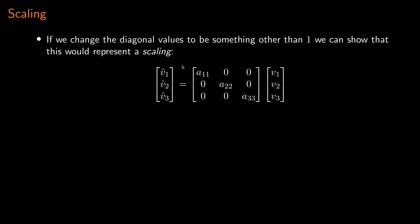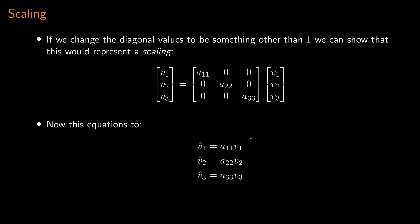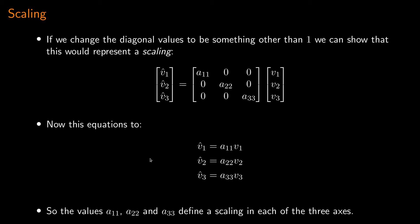V-hat-1 equals A11*V1, V-hat-2 equals A22*V2, and V-hat-3 equals A33*V3. That is obviously a scaling operation - we're scaling each component of V by the corresponding diagonal value. So the values A11, A22, and A33 define a scaling in each of the three axes. That's pretty straightforward so far.